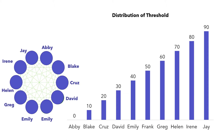Do you see the pattern here? If people in the network make the decision of adopting an idea sequentially with this distribution of thresholds, it doesn't need all 10 people to initiate an information cascade. In this case, how many people does it take to set off an information cascade? It actually takes only one person — and that person is Abbey.